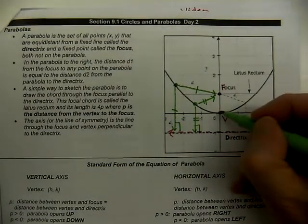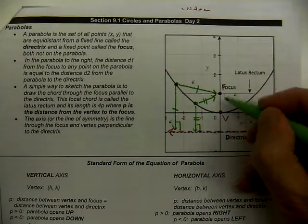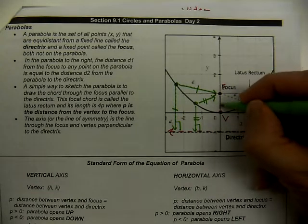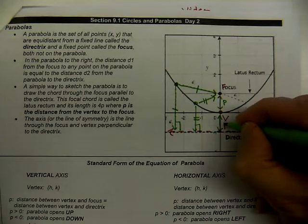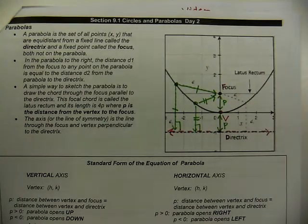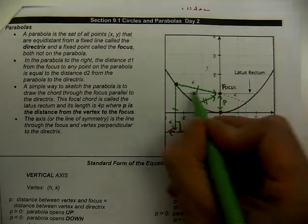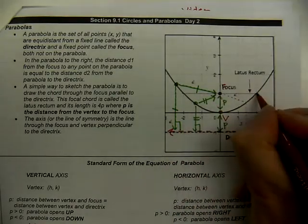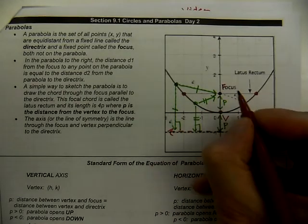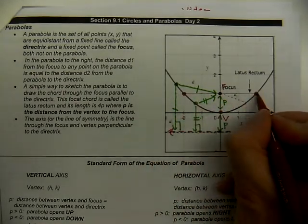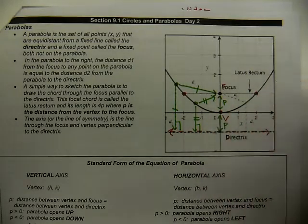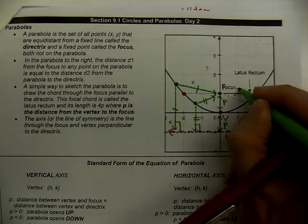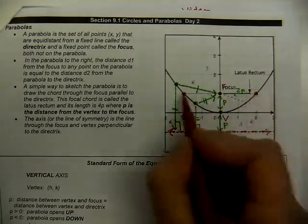The vertex is also equally distant between the focus and the directrix. This distance we're going to label with the value of P, which will be part of our equation. We'll also have two additional points to the right and left of the focus, so we'll be graphing four points altogether: the vertex, the focus, and then two on either side of the focus. This distance on either side is double the value of P, so that's two times P.